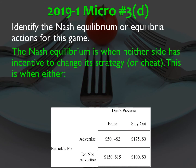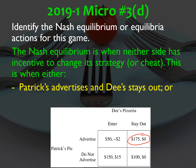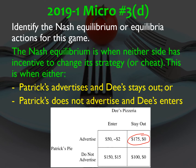Part D: identify the Nash equilibrium or equilibria. A Nash equilibrium occurs when neither side has incentive to change its strategy. First: if Patrick's advertises and D's stays out — Patrick earns $175, D earns $0 — neither has incentive to deviate. Second: if Patrick's doesn't advertise and D's enters — Patrick earns $150, D earns $15 — Patrick won't advertise instead (profits drop from $150 to $50), and D's won't stay out (profits drop from $15 to $0). These two positions are the Nash equilibria for the game.